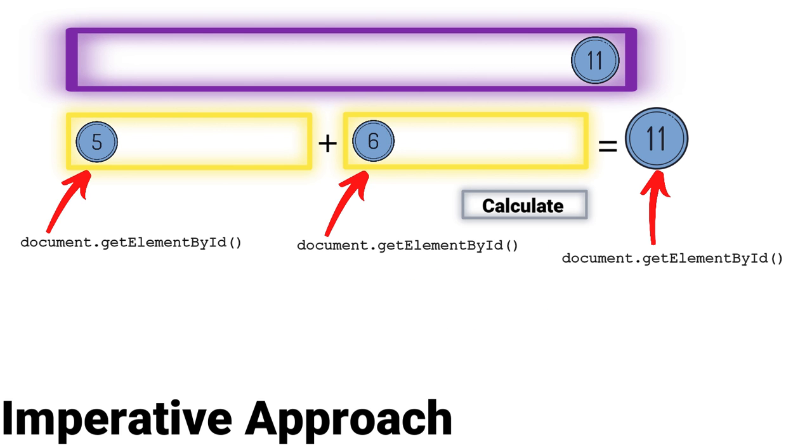Now you write the logic to calculate the sum on this button. So you write the click event and the references which you have gathered from these two text boxes, you add up the value and you assign to this label. So here also you have taken a reference and you assign the value.